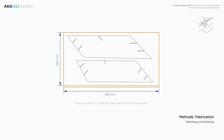Because of the considerably larger sizes, very few elements could be nested on a single sheet. This increased nesting and fabrication time exponentially, but the time lost was compensated by reducing time spent sorting and packing the pieces afterward.